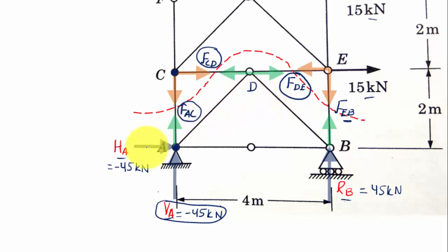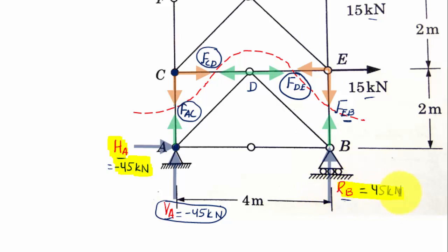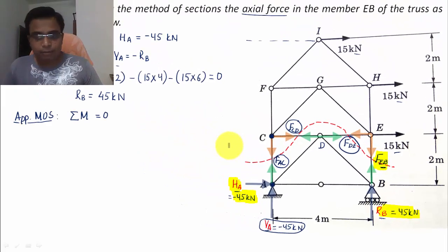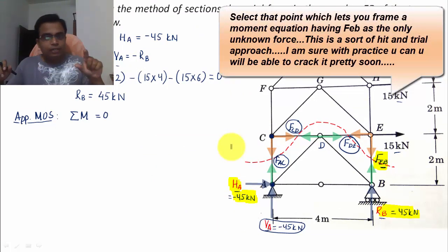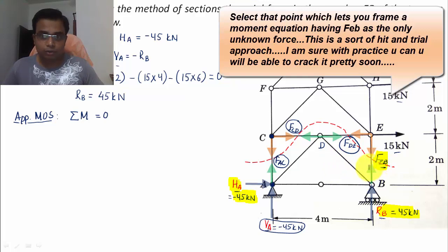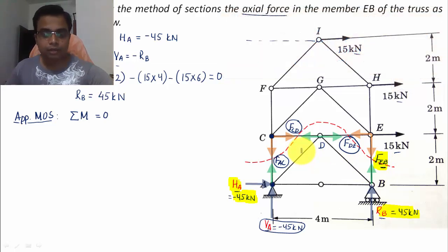The forces that have an impact in the moment equation are: the minus 45 kN force (HA), the RB force, and F_EB, which is the only unknown. Choosing the point cleverly so that you get a single equation with F_EB as the sole unknown — that is the idea behind selecting the moment point.